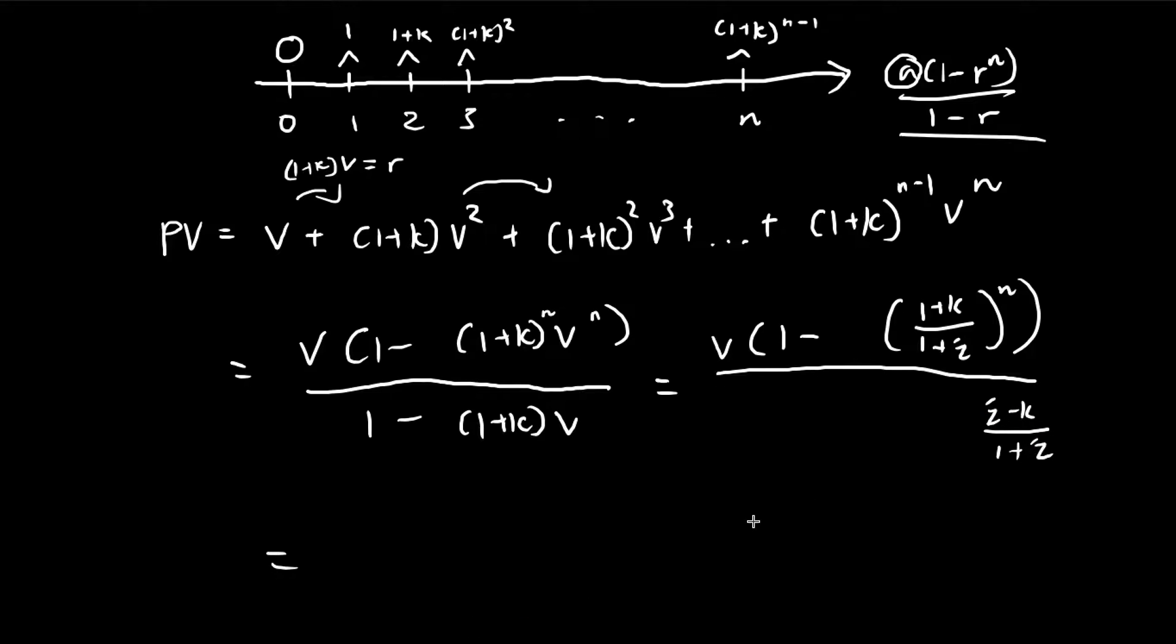As you can see, this fraction here, we can actually flip this. Instead of writing them like this, this becomes (i-k) times (1+i). We just took that fraction and flipped it. Then (1+i) multiplied by v is just equal to 1, because v equals 1 over (1+i). So actually, we have it. This is our formula.